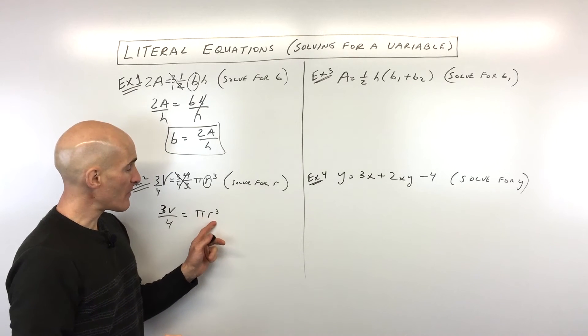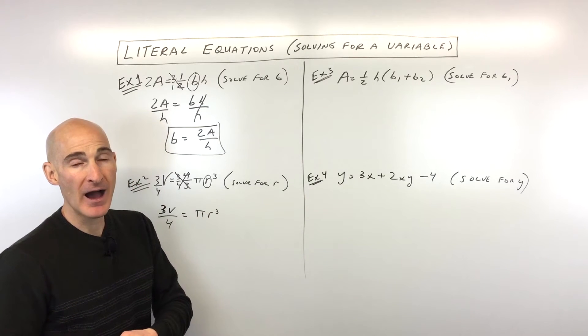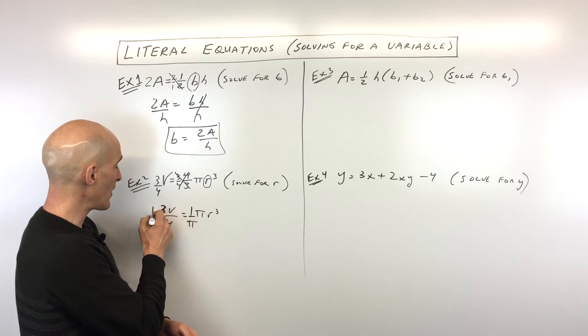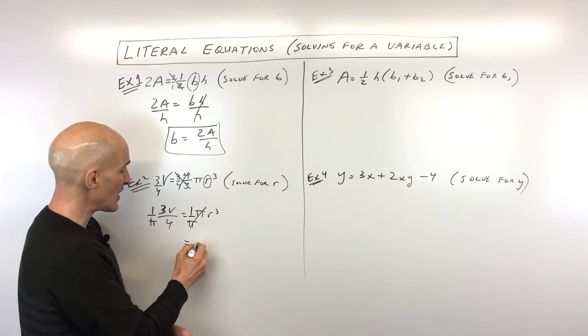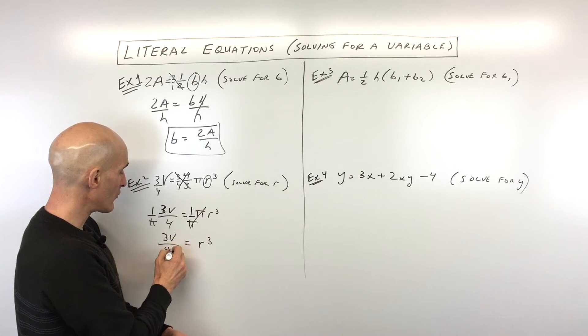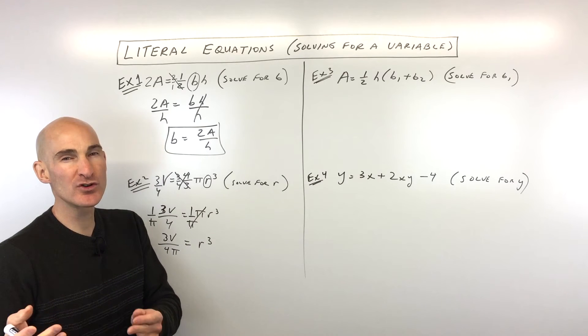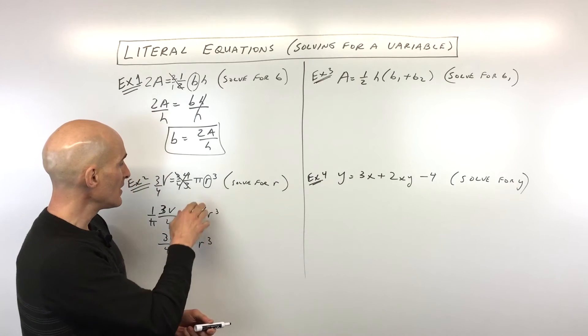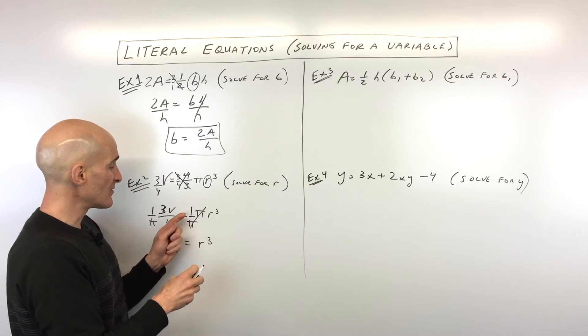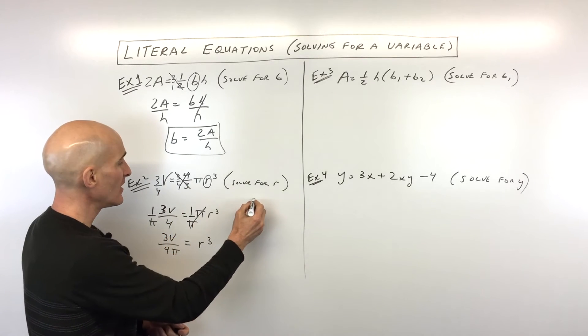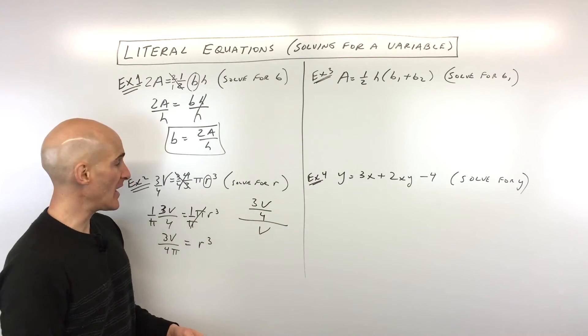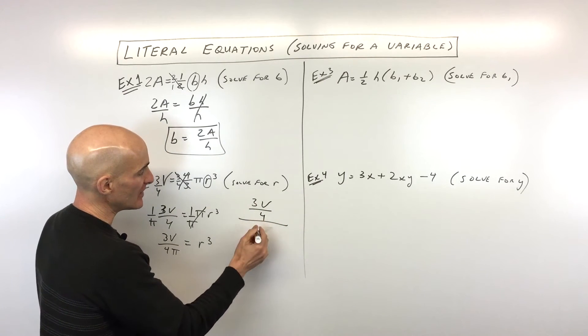Now what we want to do, you can see we're multiplying by pi. We're going to actually want to divide by pi, or you can think about it as multiplying by the reciprocal. So we're going to multiply by 1 over pi. That way these cancel. So now we have R cubed equals 3V over 4pi. Now just remember, when you're dividing by pi, that pi is going to go in the denominator because it's like multiplying by 1 over pi.